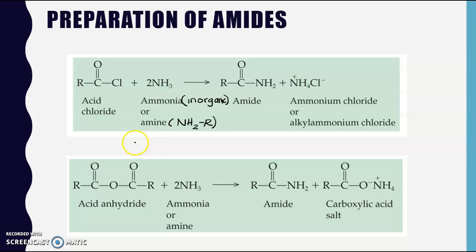Another thing to draw your attention to is this '2' here - it takes two molar equivalents. So we need two moles of our nitrogen-containing compound for every one mole of our acid, our carbonyl-containing compound, in order to generate our amide.